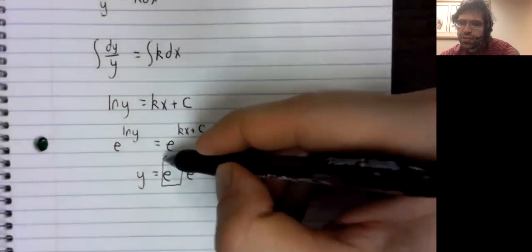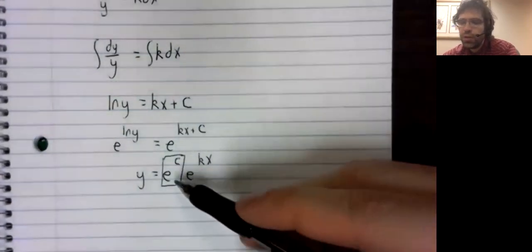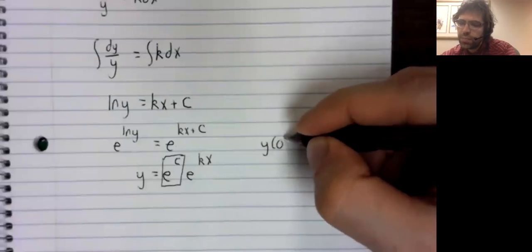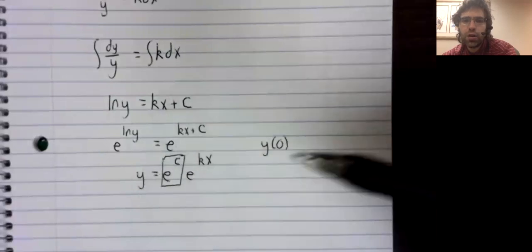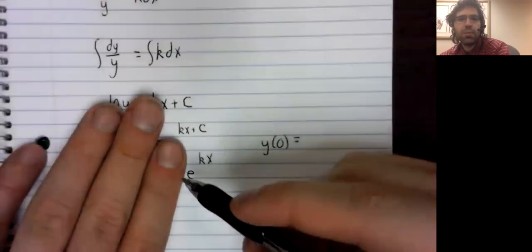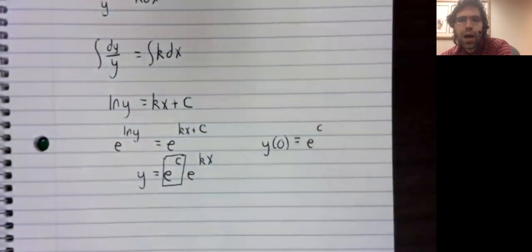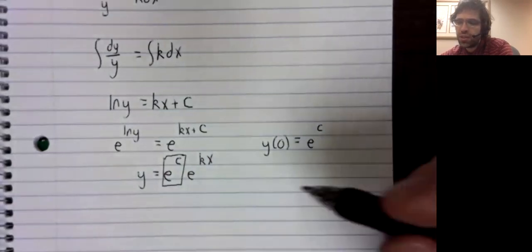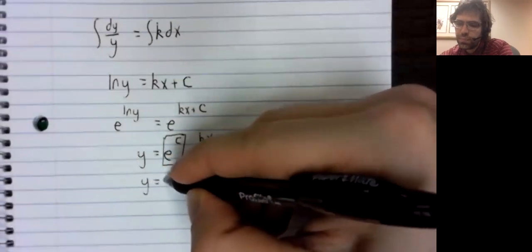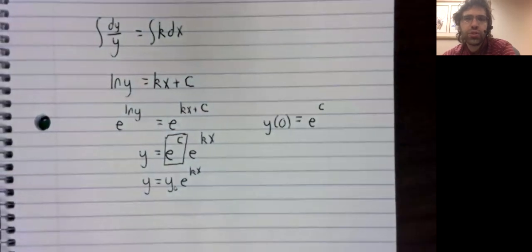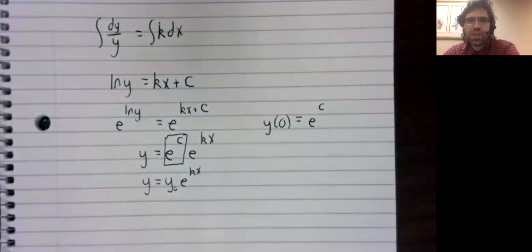Let's simplify that a little. What is the exponential of C? If we plug x equals zero in here, this becomes one — e to the power of zero is one — and we see that y of zero equals e to the C. So this e to the C represents an initial value. And there's our solution via separation of variables: the solutions are exponential.